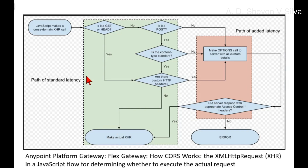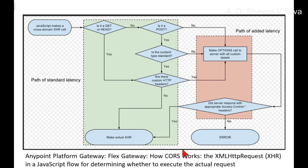As illustrated in the diagram, the request is validated based on the communication between the browser and the server. If the request is considered to be complex, then the preflight request is executed. If the server does not return the proper CORS response, the client library XHR is not allowed to perform the actual request.